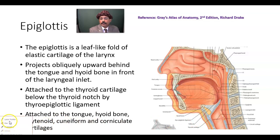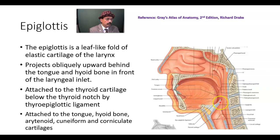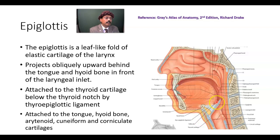We have covered the location and connections of the epiglottis. It is behind the tongue. It is connected to the tongue by means of a median glossoepiglottic fold. On each side, we will get the vallecula — the depression between the epiglottis and the tongue, on either side of the median glossoepiglottic fold.